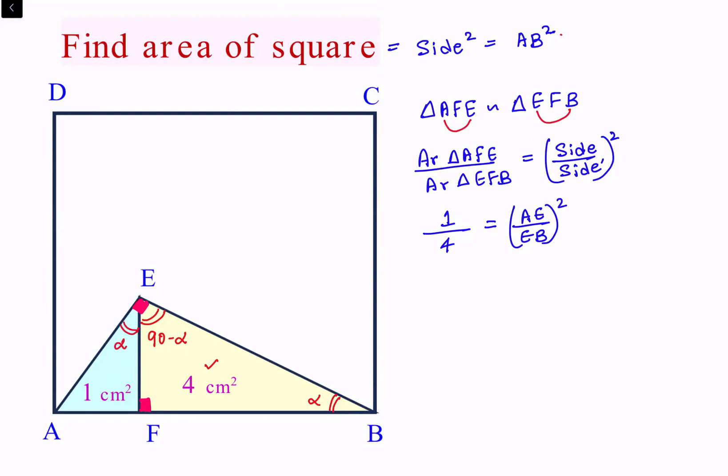Taking square root on both sides, we get 1/2 equals AE upon EB. Let's assume AE as X, so solving we get EB is 2X. So basically this length will become 2X.